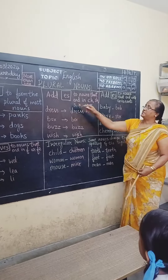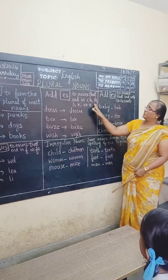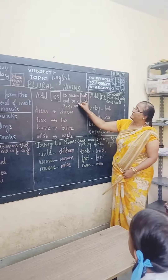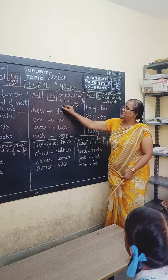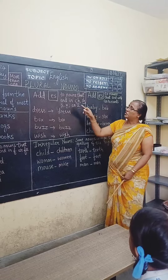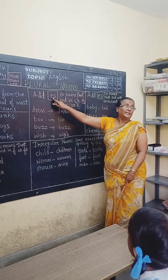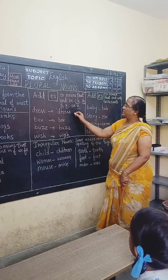Next, add E-S. Where you are going to add E-S, you should know that. Wherever the words end in C-H, S-H, we are going to add E-S.